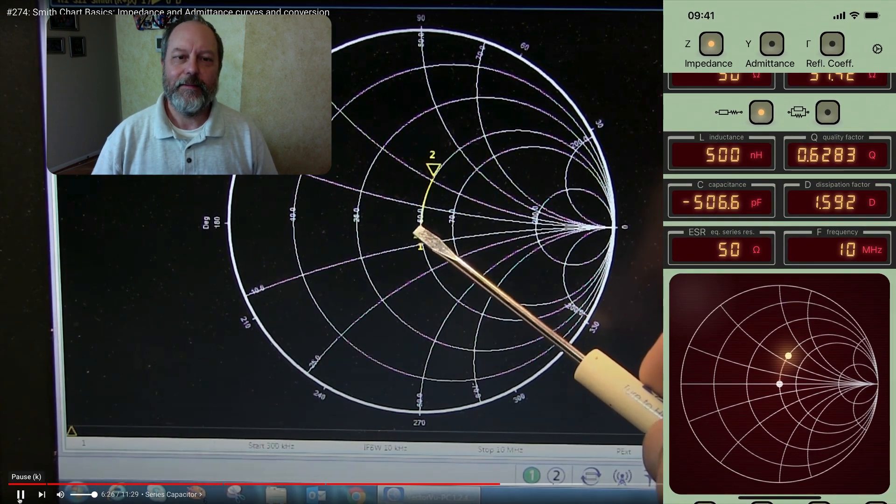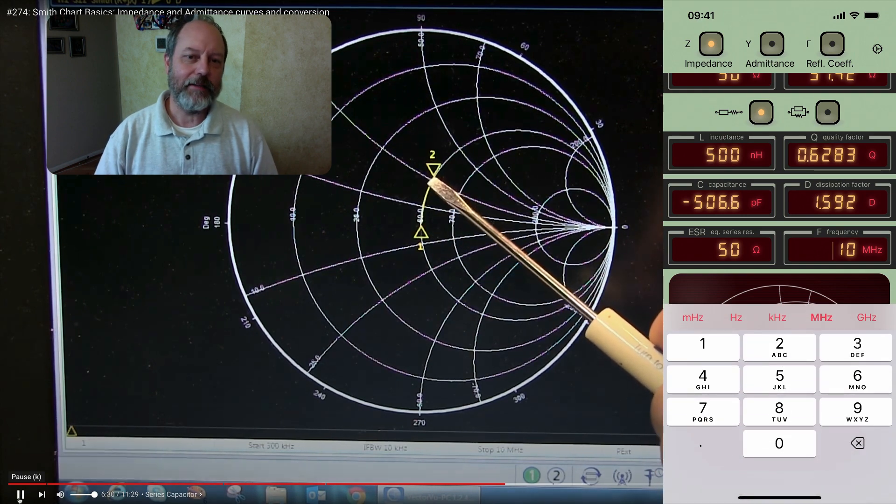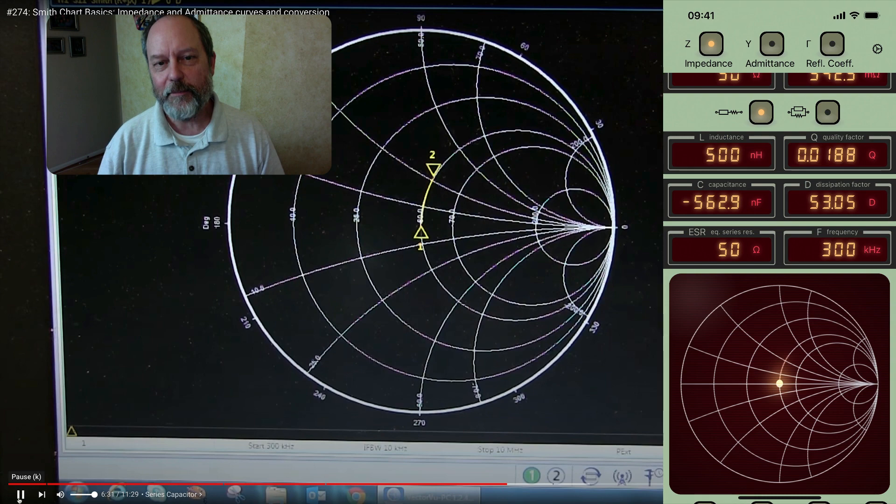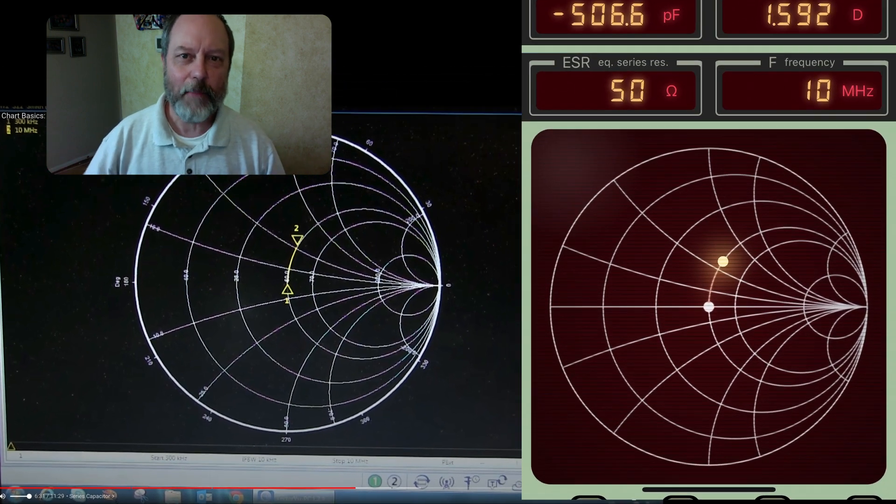And again, we're directly tracing a change in reactance in impedance converter. But with this, let's switch the setup so that we trace between 300 kilohertz to 10 megahertz to more faithfully represent a sweep in frequency, just like the VNA is doing.